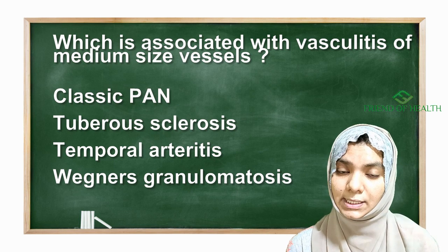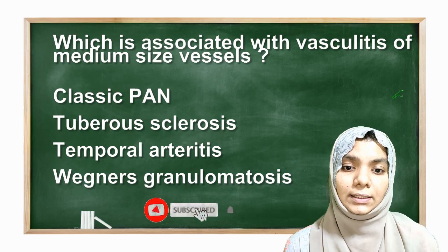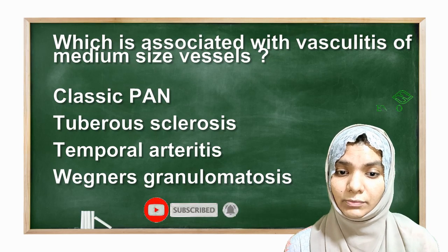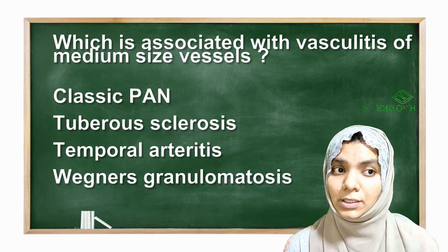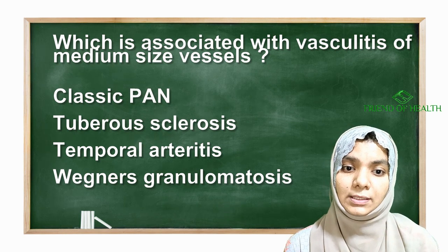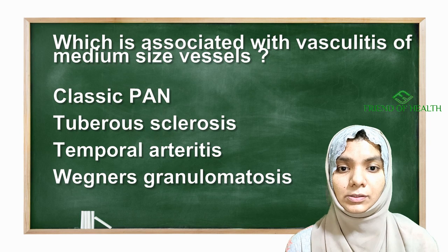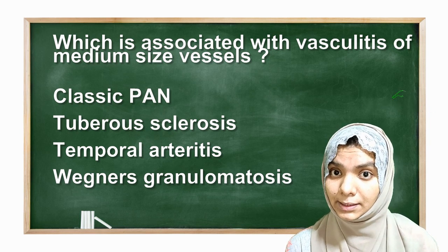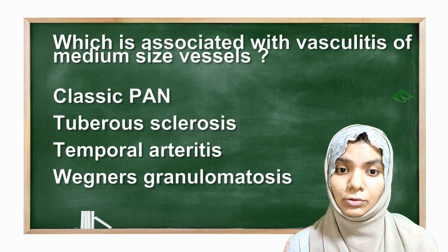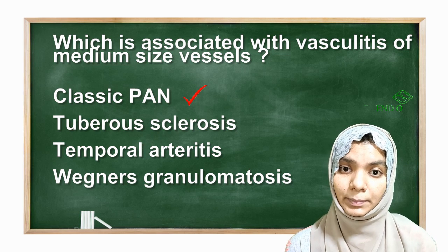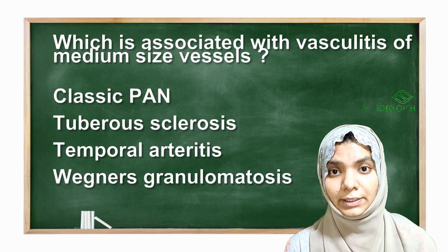For the next question — which is associated with medium vessel vasculitis? Wegener's granulomatosis is small vessel, temporal arteritis is small vessel, tuberous sclerosis is also small vessel. As we learned from the burger and kebab in a pan mnemonic, the answer is A — classic polyarteritis nodosa, which is a medium vessel vasculitis.